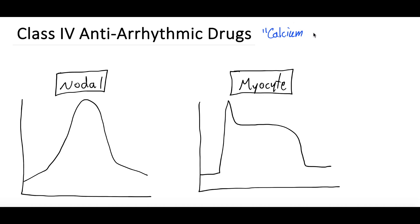For those of you who have been following along, we did an introduction to antiarrhythmic drugs, then a video on class 1 sodium channel blockers, class 2 beta blockers, class 3 potassium channel blockers, and finally class 4 calcium channel blockers. We will link all those videos in this video's description. If you're just looking for a discussion on class 4 antiarrhythmic drugs, that is what we'll talk about today.